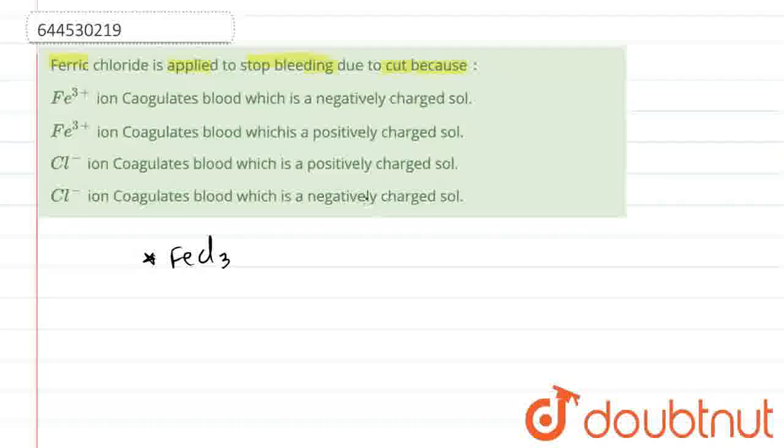So ferric chloride is used to stop bleeding in cuts because ferric chloride gives Fe3+. So what does Fe3+ do? Fe3+ coagulates blood.